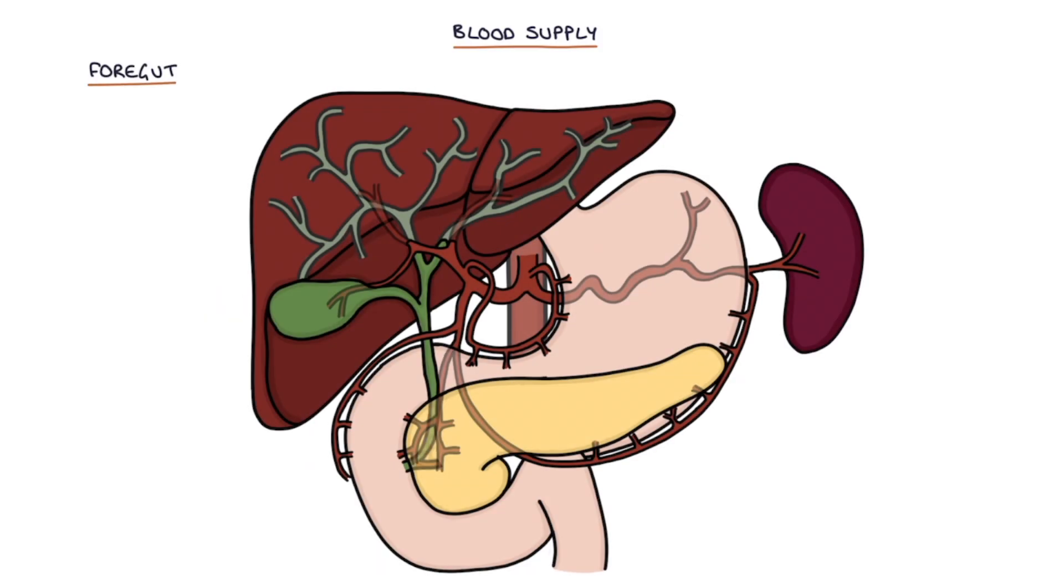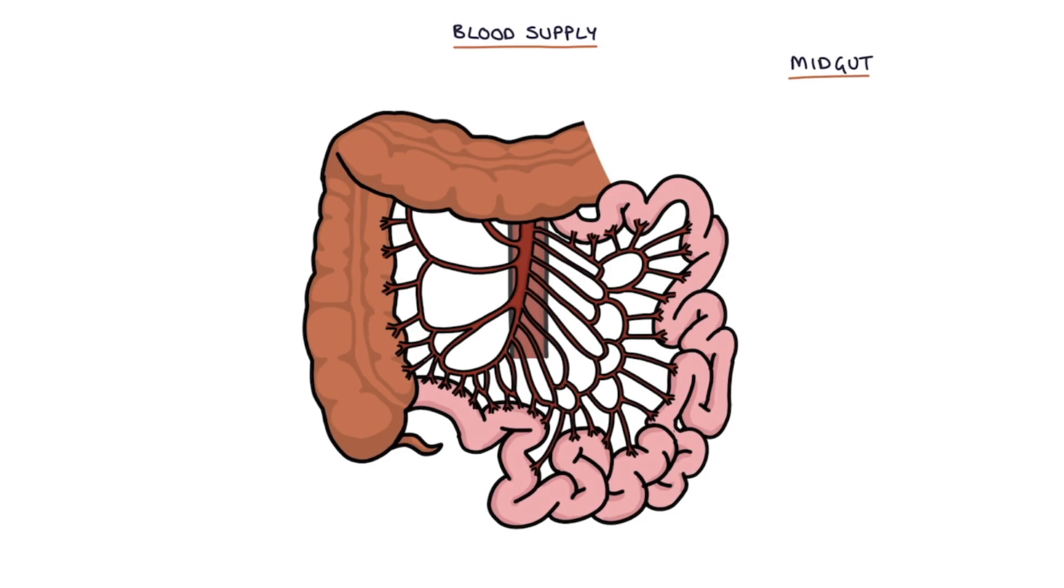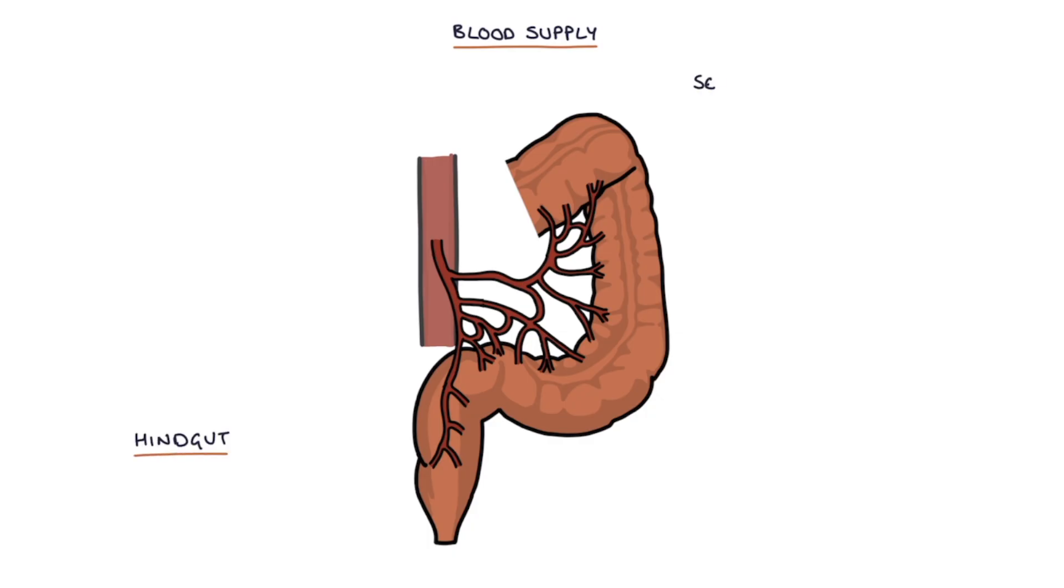The foregut includes the stomach and part of the duodenum, the biliary system, the liver, the pancreas and the spleen and the foregut is supplied by the celiac artery. The midgut is from the distal part of the duodenum to the first part of the transverse colon and this is supplied by the superior mesenteric artery and the hindgut is from the second half of the transverse colon to the rectum and this is supplied by the inferior mesenteric artery.